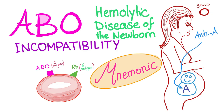This does not require sensitization, so it can occur in the first pregnancy. Unlike RH incompatibility, where the mother has to be sensitized first — so the first newborn gets a pass and is totally normal — during the second, third, or subsequent pregnancies there may be a problem. But in ABO, even the first pregnancy is susceptible.